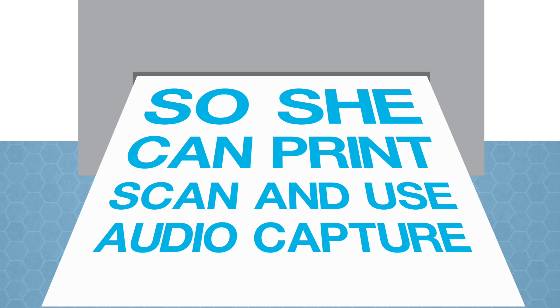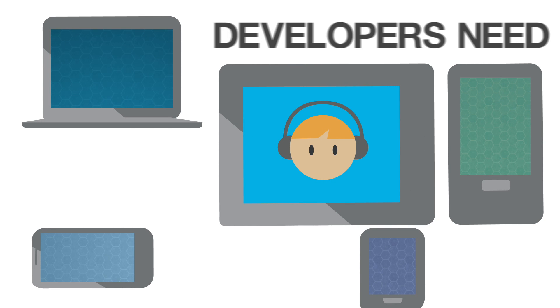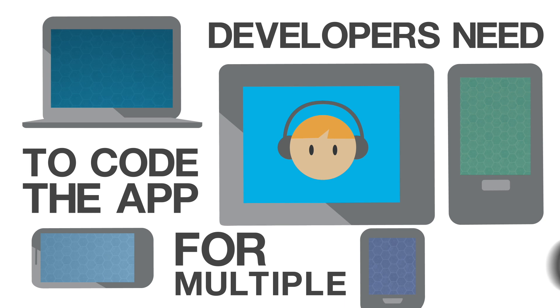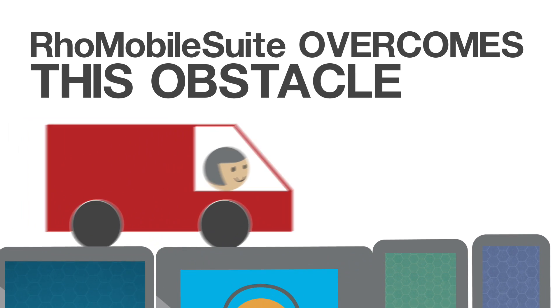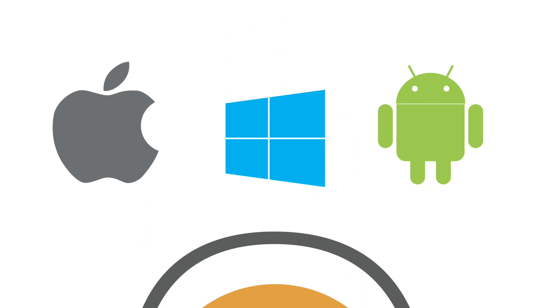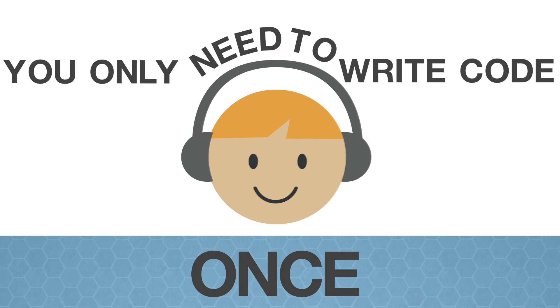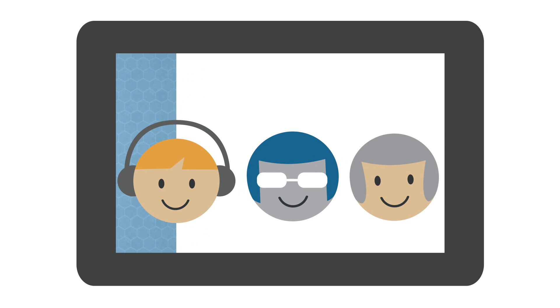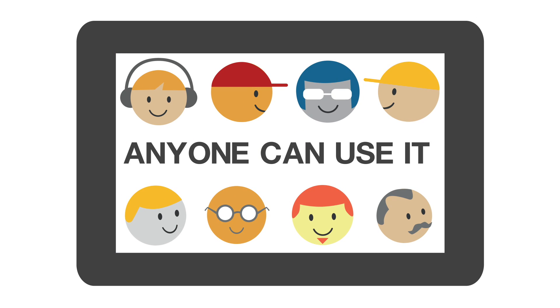Deliver Brian's bouquet by 3 p.m. But there's a problem — developers need to code the app for multiple operating systems. ROE Mobile Suite overcomes this obstacle, so it works on Android, iOS, and Windows devices, meaning you only need to write code once. And because we use an open-source framework, it's not proprietary, which means anyone can use it.